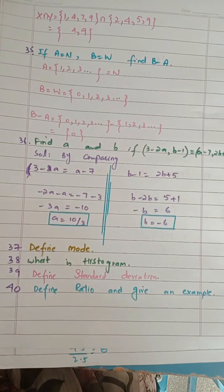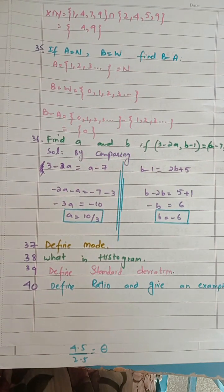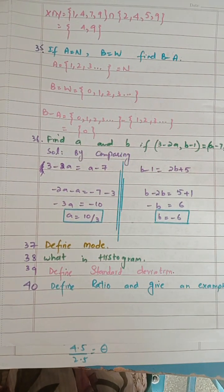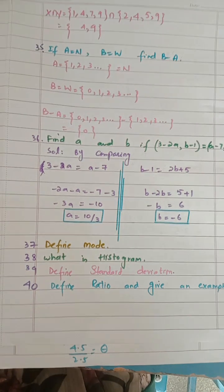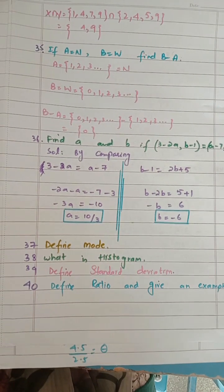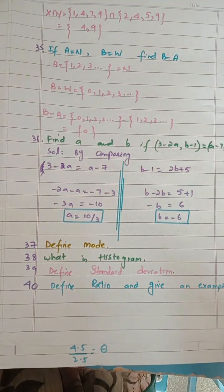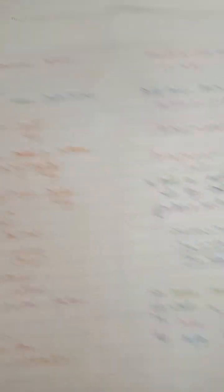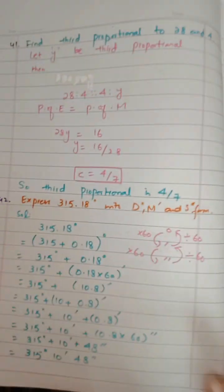Next, define mod. Mod is written. What is a histogram? Again, a definition. Define standard deviation — standard deviation is written. Define the ratio and also give an example. Write the definition and example of ratio.